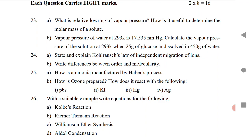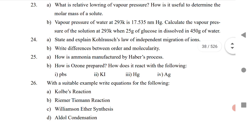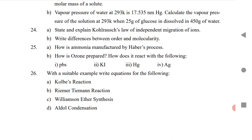The 24th is Kohlrausch's law, same from electrochemistry. Next is 25th from P-Block: ammonia manufactured by Haber process, and how ozone is prepared.